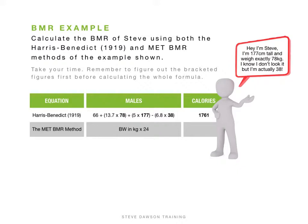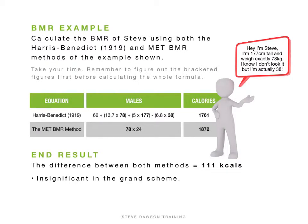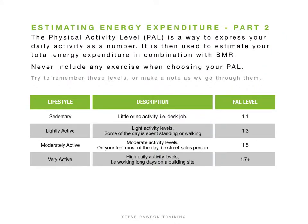For clients I use the Harris-Benedict method on a spreadsheet, but if someone wants a quick answer I'll use the MET BMR method since there's practically no difference. That's the first part. The second part of estimating energy expenditure is PAL — physical activity level. This is a way to express your daily activities as a number, which you then combine with BMR to figure out your daily energy expenditure.